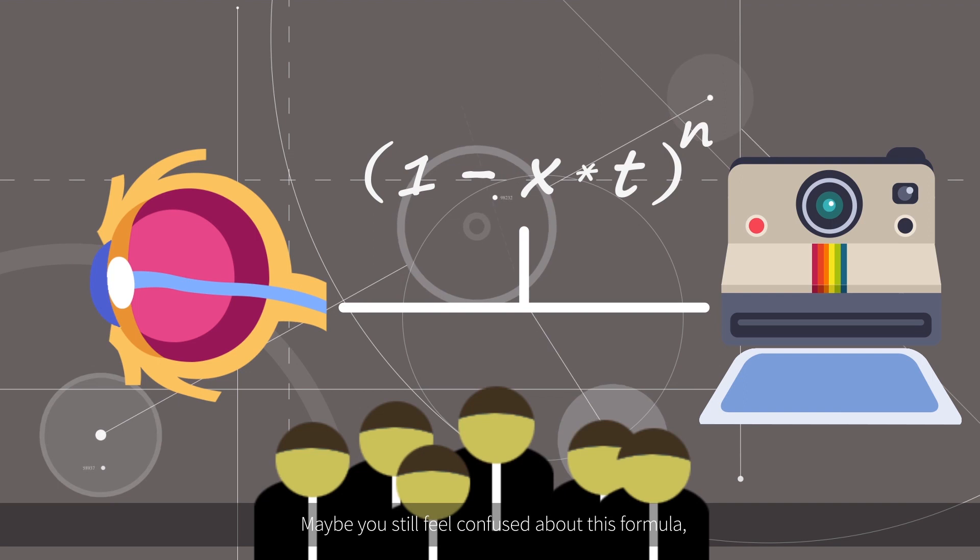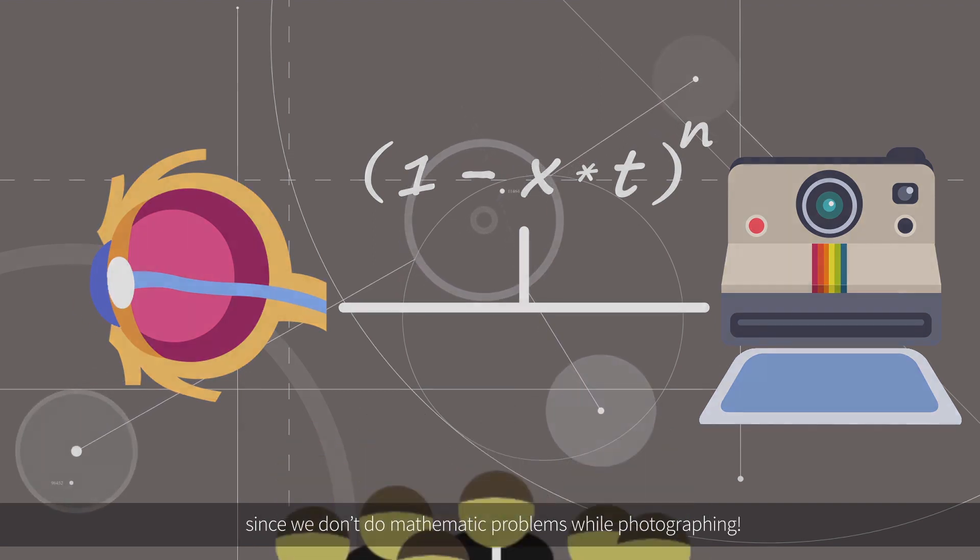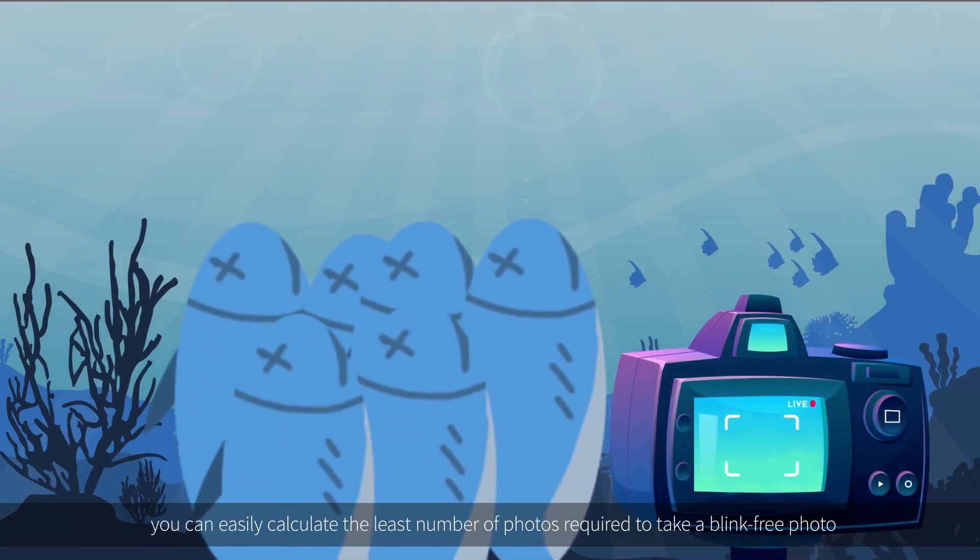Maybe you still feel confused about this formula since we don't do mathematic problems while photographing. It doesn't matter. Here is a rule of thumb you can easily calculate: the least number of photos required to take a blink-free photo by dividing the number of people by three.